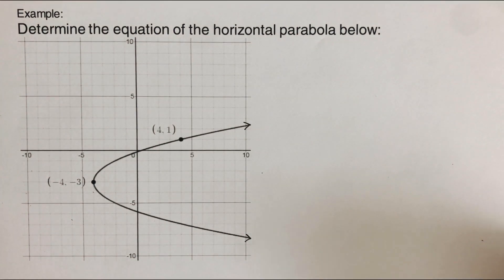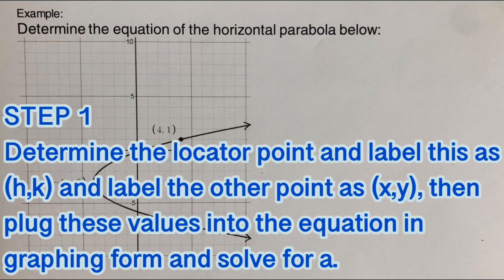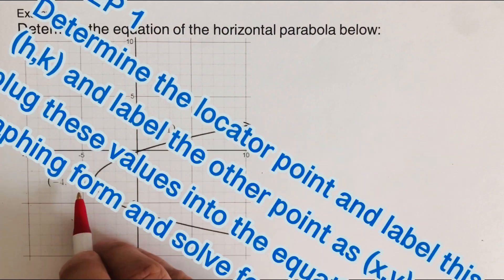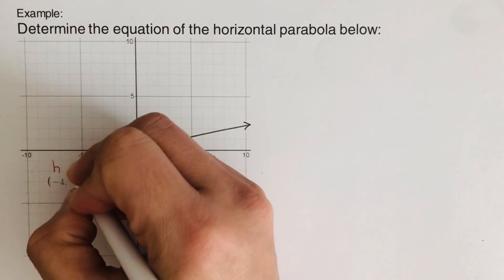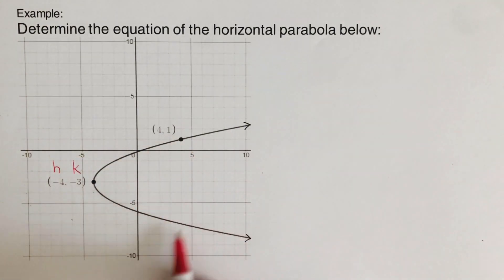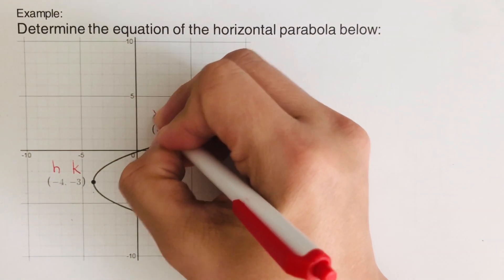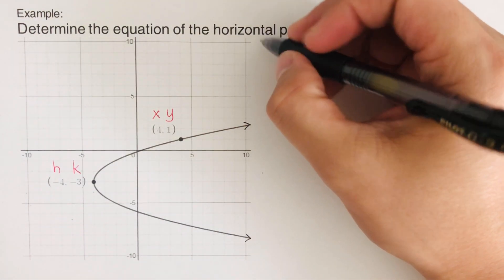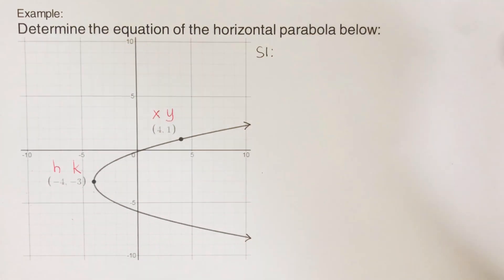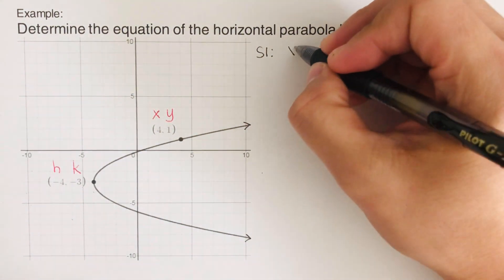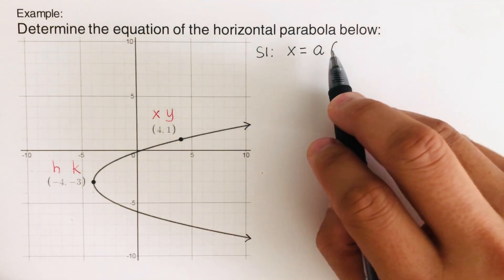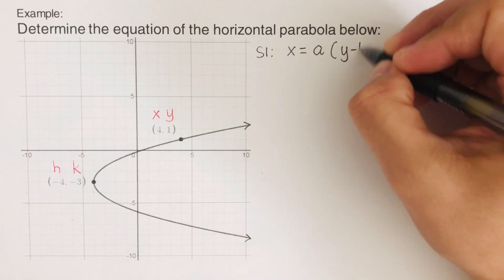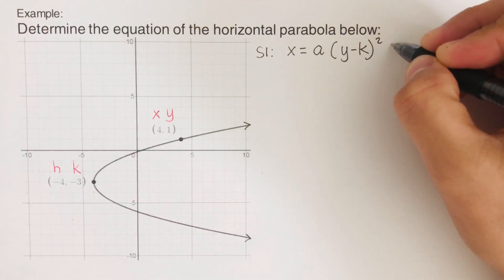Let's go over this problem. The first step is to determine the locator point and label it as (h, k), and label the other point as (x, y), then plug these values into the equation in graphing form and solve for a. This is our vertex, so this will be our (h, k), and this other point is where the graph passes through — labeled as (x, y). The graphing form we use is x equals a(y minus k) squared plus h.